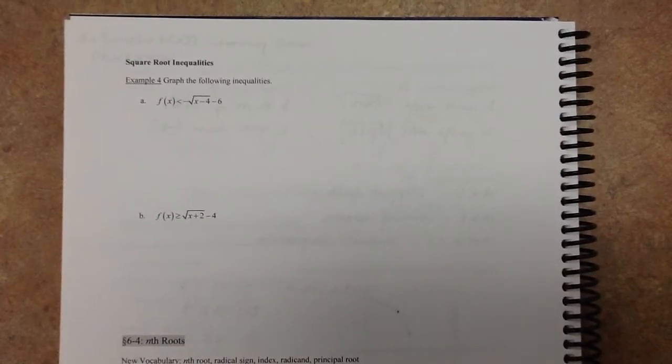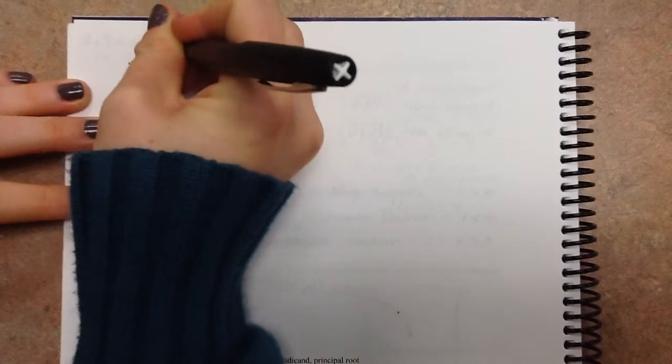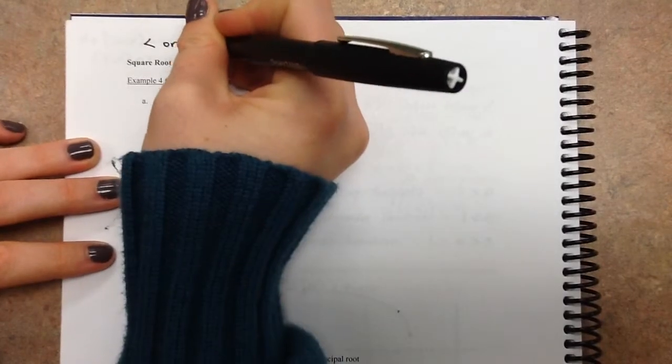So let me write just a couple of little pointers up above here. Remember if you have less than or just a greater than and there's no or equal to, it is a dashed line.